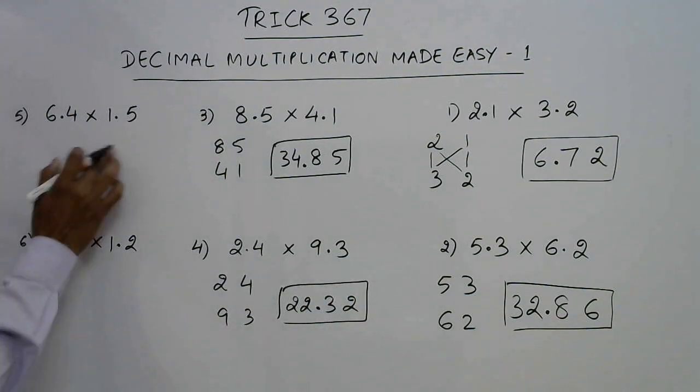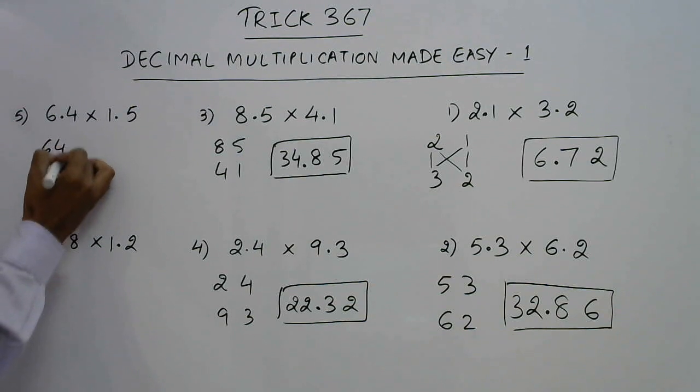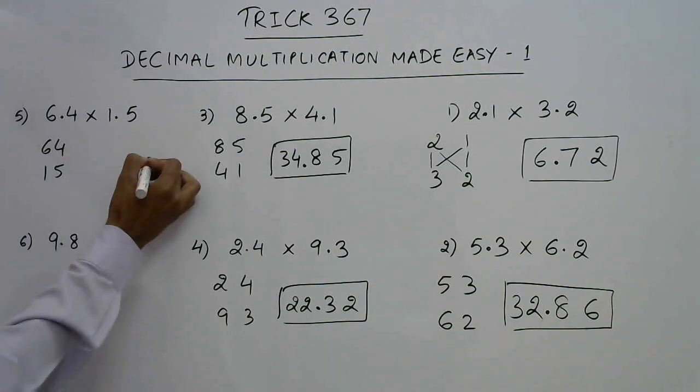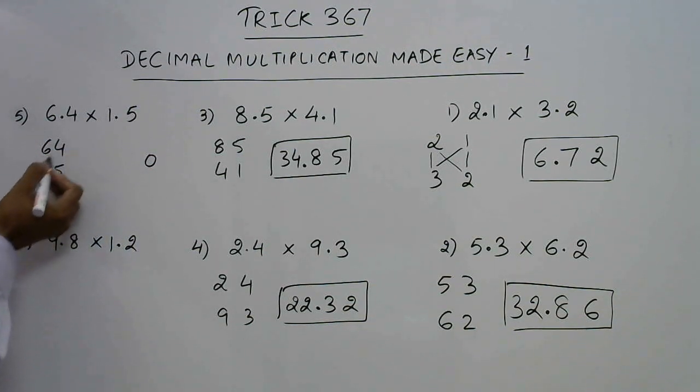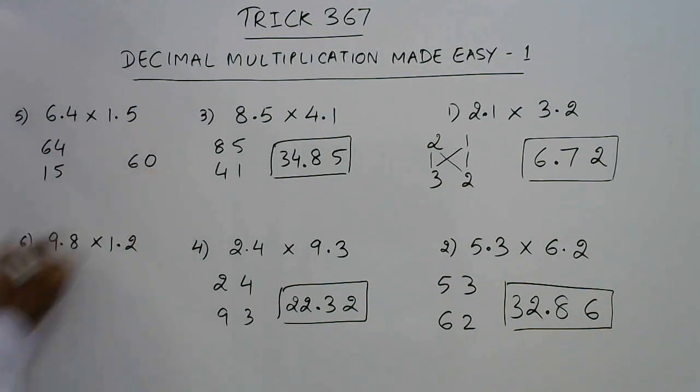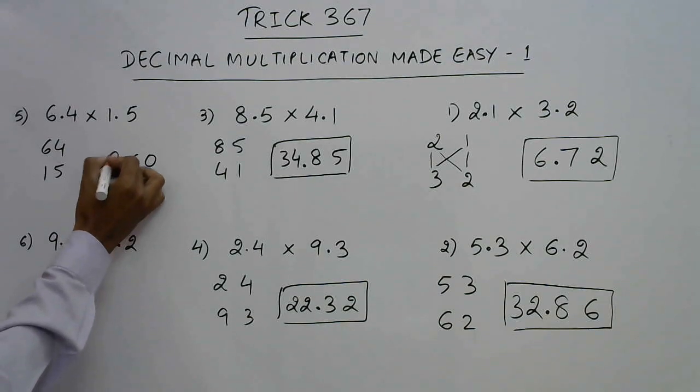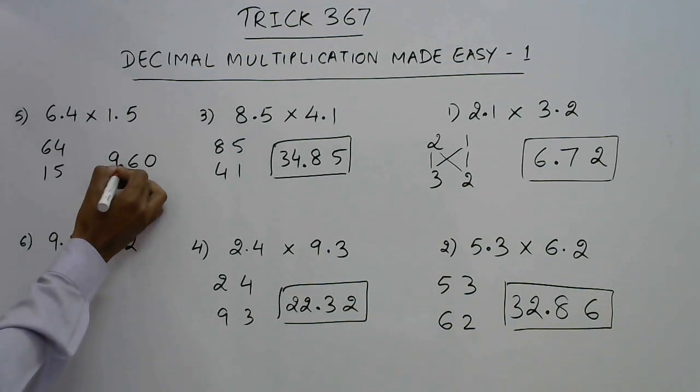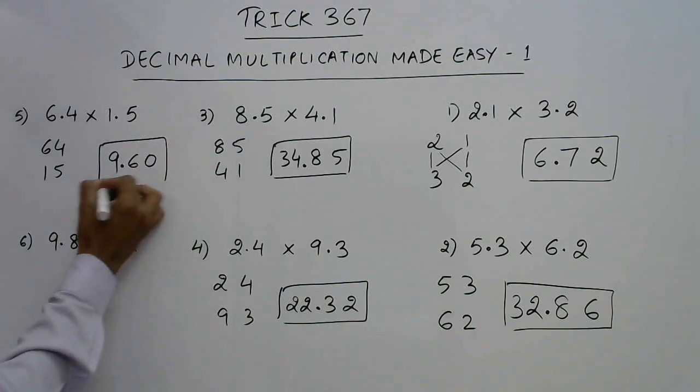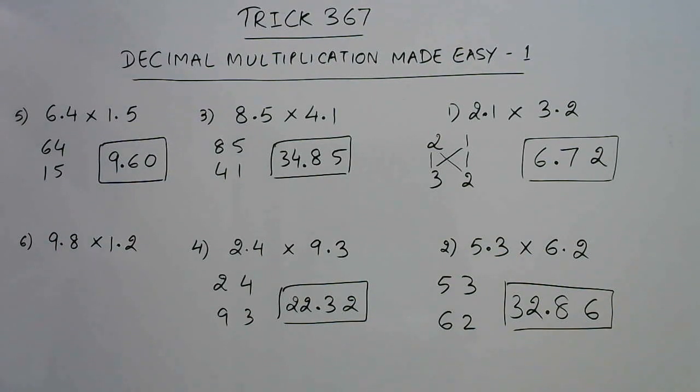More questions. See we have 6.4 and 1.5. 5 fours are 20, write 0, 2 carry. 30, 34 and 2, 36, write 6, 3 carry. 6 plus 3, 9. So if you put a decimal here 9.60 is the product of 6.4 and 1.5.